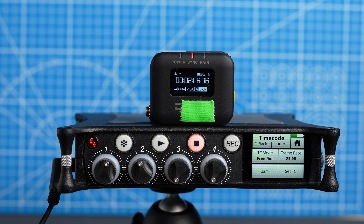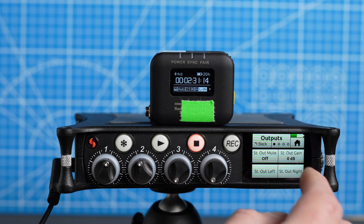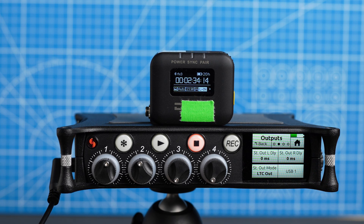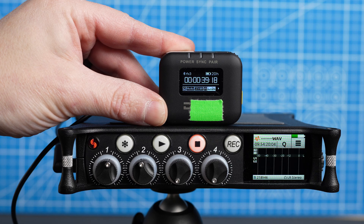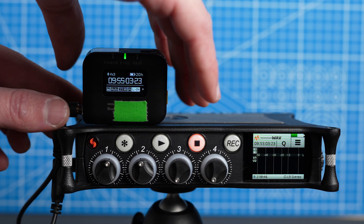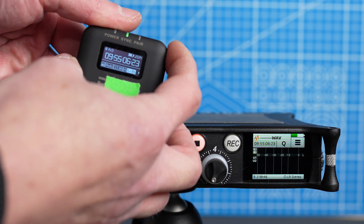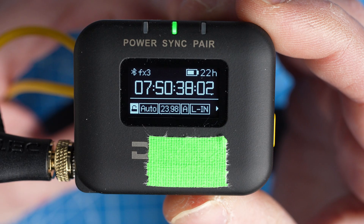On the MixPre, choose timecode, frame rate 23.98, TC mode to free run. Match the frame rate on your cameras — most cameras shoot non-integer rates like 23.98 even when they say 24 or 30. Choose outputs, stereo out mode, LTC out. Now plug a 3.5mm cable into the MixPre stereo out, change the TC1 to receive line in, connect the cable, and we've got matching timecode. Then unplug the TC1 and change it to L-out or A-out depending on whether your camera takes audio or metadata timecode. A is for audio timecode.